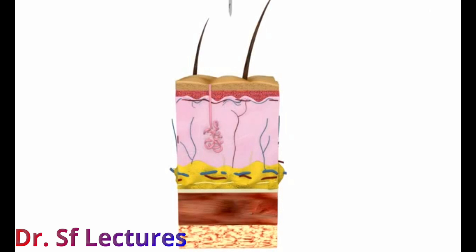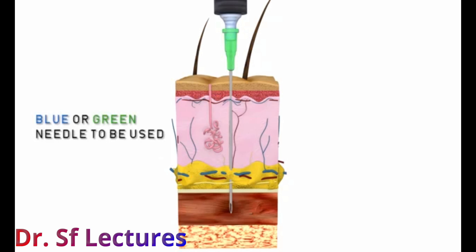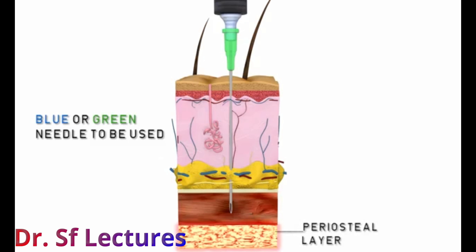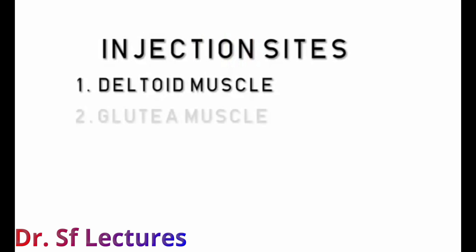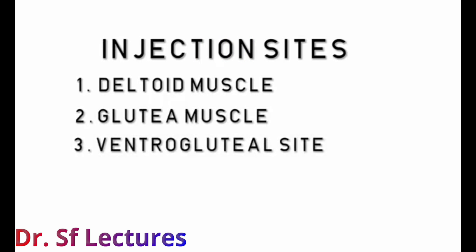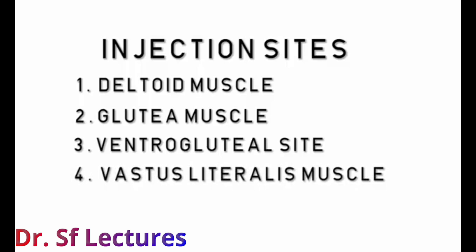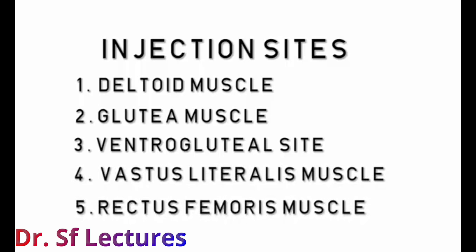The intramuscular route is used when a rapid systematic action is required. The nurse must consider whether a blue or a green needle should be used to access the muscle of the patient without hitting the periostal layer of the bone. The intramuscular injection can be injected on five sites: the deltoid muscle, the gluteal muscle, the ventrogluteal site, the vastus lateralis muscle, and the rectus femoris muscle.